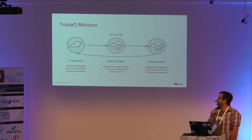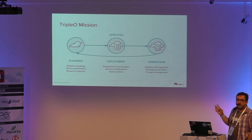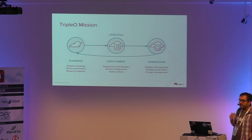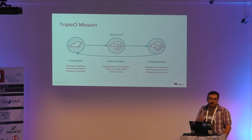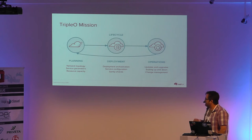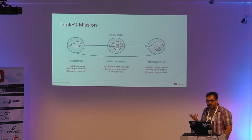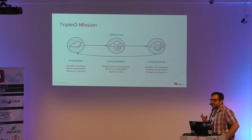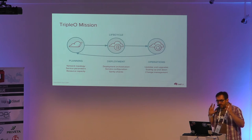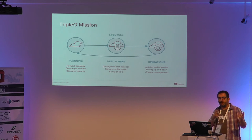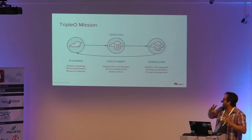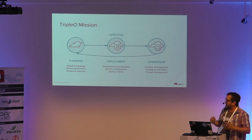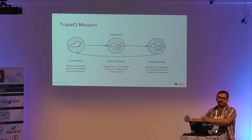The mission of TripleO is full lifecycle management for an OpenStack deployment, which really breaks down into three different areas. The first is the planning that needs to happen before the deployment actually takes place: setting network IPs, setting service parameters, resource capacity, estimating the number of machines at different capacities you need, the roles you want to put them into. Then the deployment itself, orchestrating the actual process — putting the bits onto the machines.